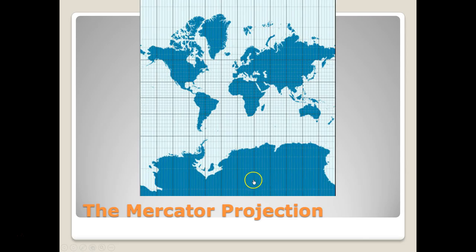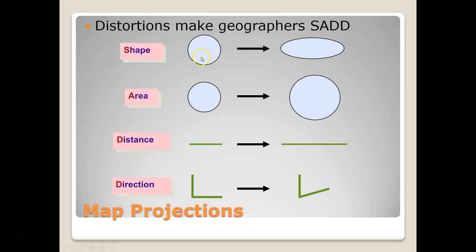Look also at the landmass of Antarctica — it makes it look quite massive, when in fact it is not nearly that massive. There are distortions that happen when we flatten out that round object using any of these various projections. The different properties that get distorted are shape, area, distance, and direction.